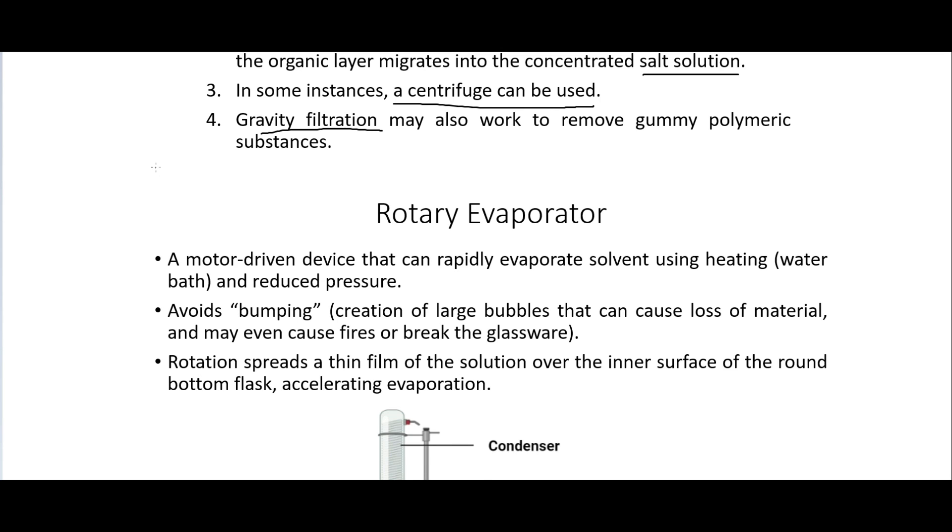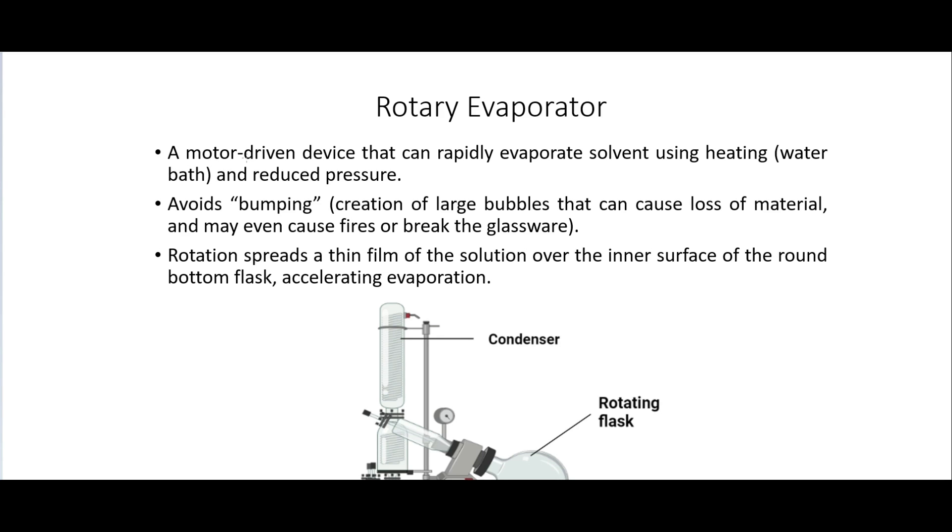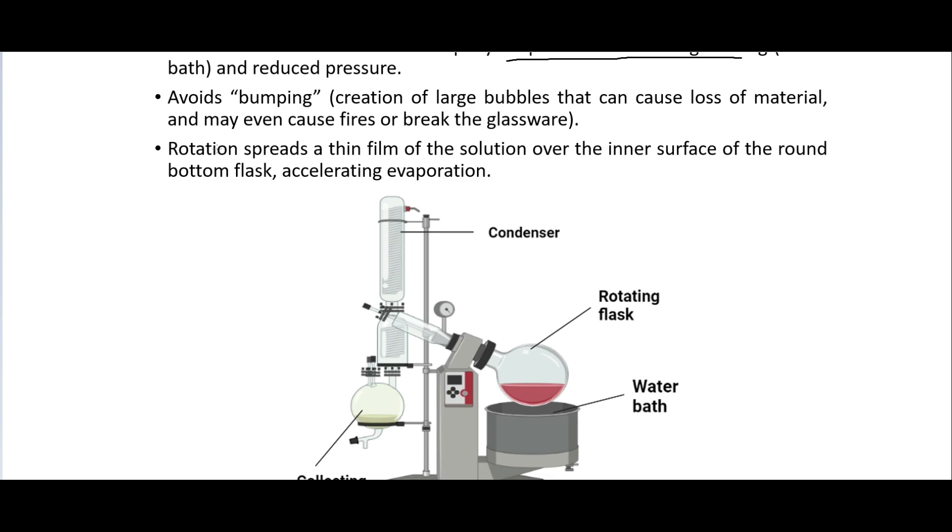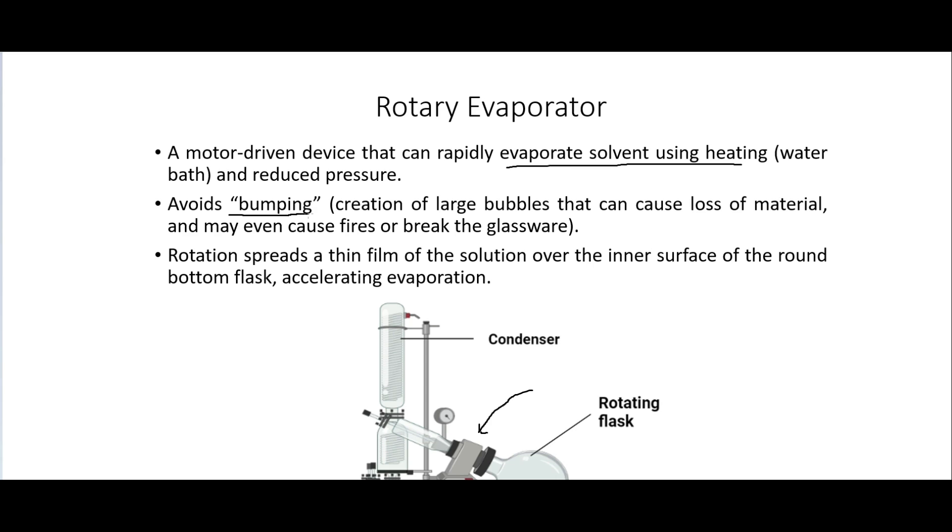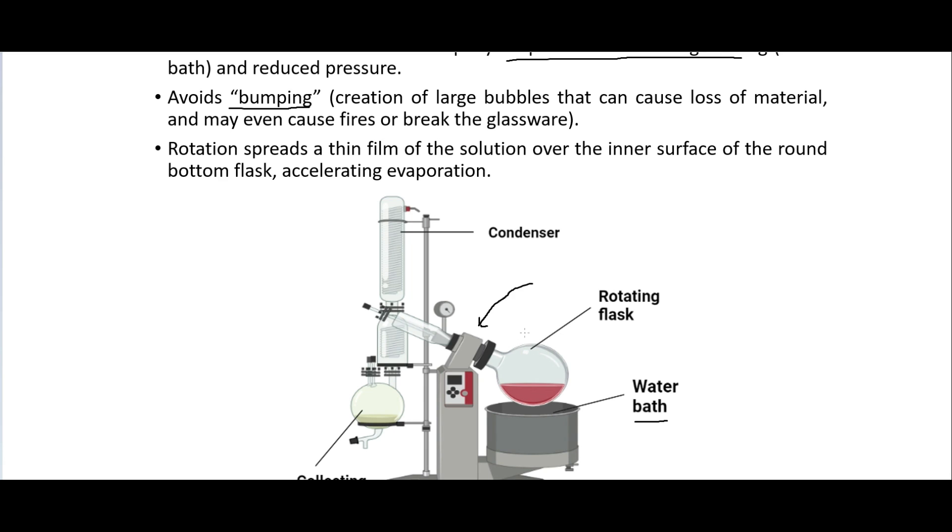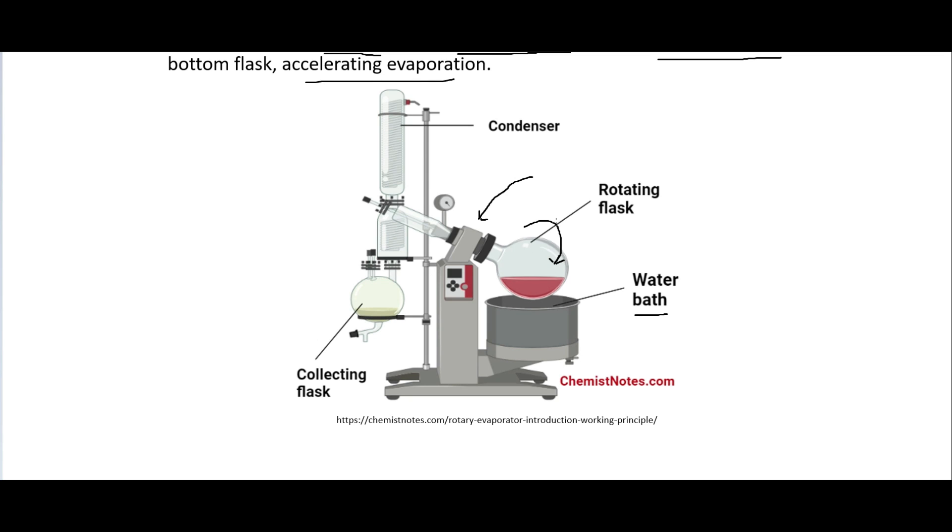So something else you'll use a lot when doing extractions are these rotary evaporators. So they are a motor driven device that can rapidly evaporate solvent using heating usually in a water bath and reduced pressure. So they will look like this. We have our water bath here and we have this motor that can reduce the pressure inside of it. So this avoids what's called bumping which is the creation of large bubbles that can cause loss of material and can even cause fires or break the glassware. So the rotation, so this is going to be rotating around this way and that spreads a thin film of the solution over the inner surface of the round bottom flask which accelerates the evaporation. And so that's something that you often do during these extractions is you do a rotary evaporation to get rid of some of the solvent.